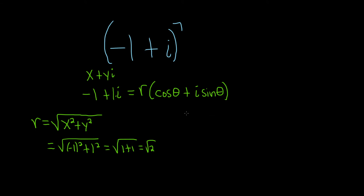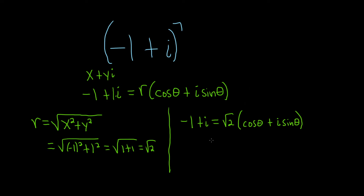Then I like to plug it back in. So we have negative one plus i is equal to the square root of two times the quantity cosine theta plus i sine theta. We've found the modulus r, and we just have to find the argument. I like to do it from a constructive approach — I distribute the square root of two — rather than using the tangent function. It just seems more natural than memorizing a formula.